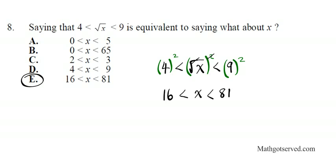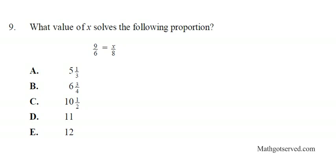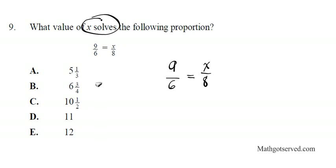Moving along to question number 9. It says: what value of x solves the proportion 9 over 6 equals x over 8? So we have 9/6 = x/8. To solve for x, we need to isolate x.